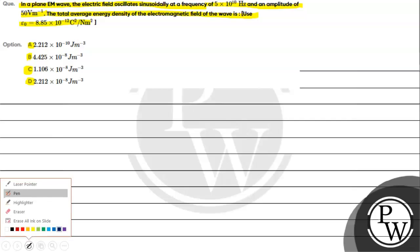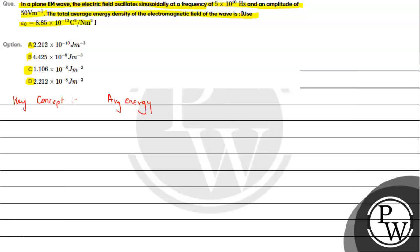The key concept is average energy density of EM waves. Average energy density of EM waves is given by the expression which we have already studied. If we talk about the electric field, it will be half epsilon naught E squared.